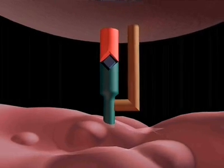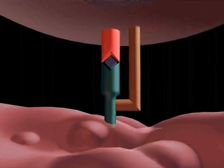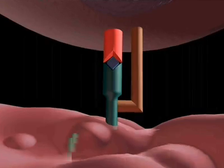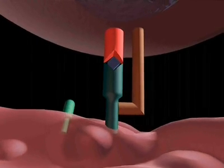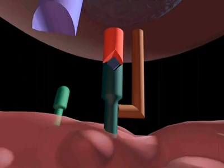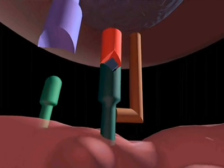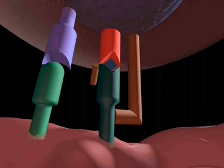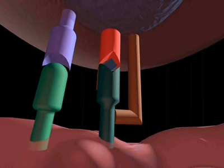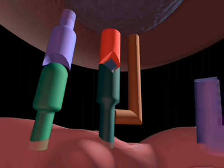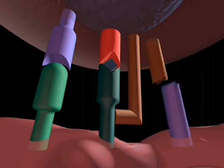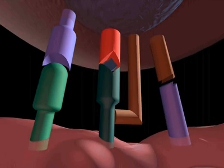This binding alone is insufficient to trigger T cell activation. Other co-stimulatory molecules already on the surface of the T cell come into play. ICAM-1, which stands for intracellular adhesion molecule 1, on the macrophage, binds to LFA1, lymphocyte functional antigen 1, on the T cell, while CD2, also on the T cell, binds to LFA3 on the macrophage.